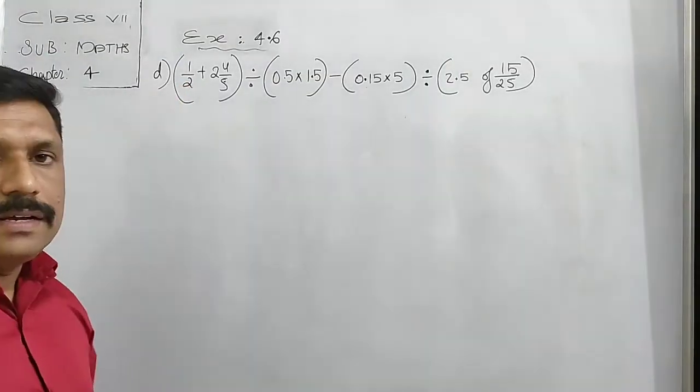1 divided by 2: 2 is bigger, so 0. Then 2 fives are 10, so 1 upon 2 equals 0.5. And 2 and 4 upon 5: we convert the mixed fraction. 2 times 5 equals 10, plus 4 equals 14. So 14 upon 5. When we change 14 upon 5 to decimal: 5 twos are 10, remainder 4, then 40, and 5 eights are 40 — so it is 2.8. This number is 2.8.